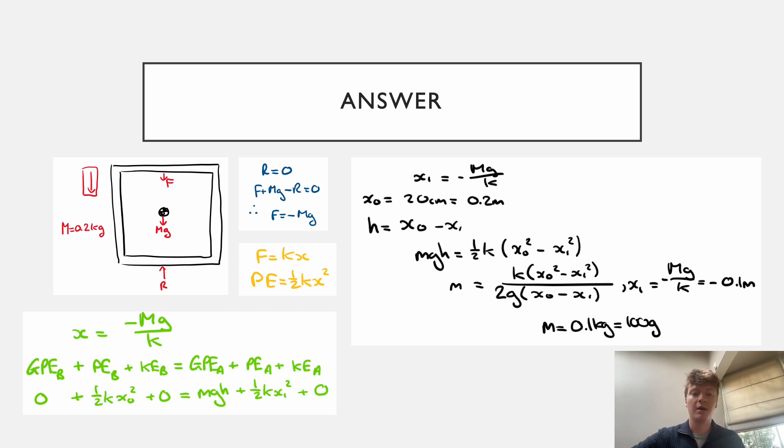So the next thing I've done is rearrange the bottom line of the green stuff to get MGH on one side and the two potential energies on the other side, and then divided through by GH to get M by itself. And I substitute in the value for H we just found, the X0 minus X1. And then we can evaluate X1 first with minus MGH on K. And that comes out to minus 0.1 meters, which means the spring is 10 centimeters compressed at the top. And if we sub all that into our value for M, it comes out for 0.1 kilograms or 100 grams, which is the final answer.